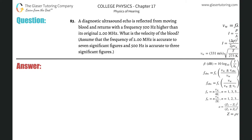Number 83: A diagnostic ultrasound echo is reflected from moving blood and returns with a frequency 500 hertz higher than its original 2 megahertz. What is the velocity of the blood?